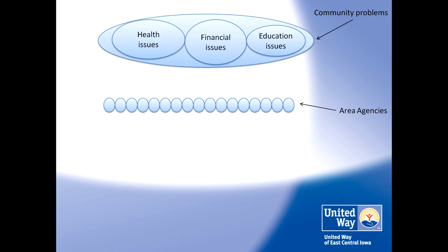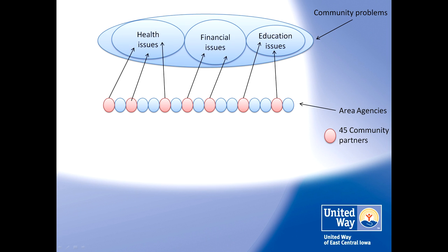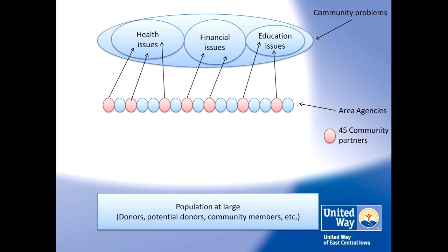There are agencies in the community that work on solving problems. We focus on partnering with the ones that also focus on our three areas of impact. Then there's the population at large — that's our 24,000 donors and 2,000 companies — as well as potential donors and people who are interested in our mission.